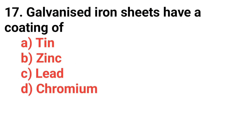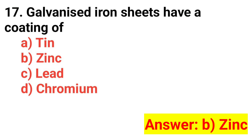Question number seventeen: Galvanized iron sheets have a coating of? The answer is option B: zinc.